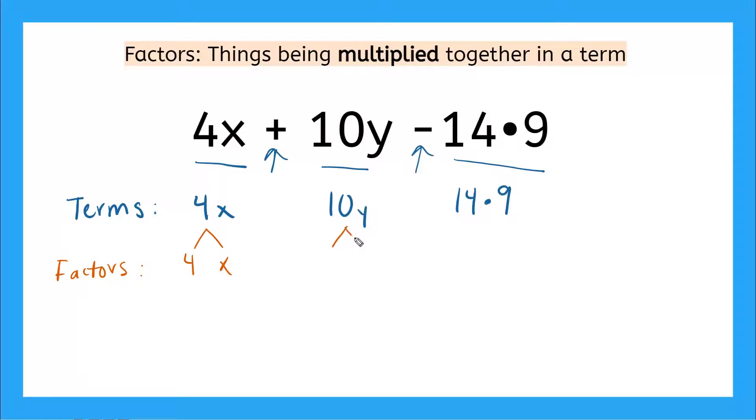So how many factors are in our second term? Our second term is 10y. What's being multiplied together? Yeah, 10 and y. So how many factors are in our second term? Yeah, there's two, 10 and y. And how many factors are in our first term? Also two, 4 and x.